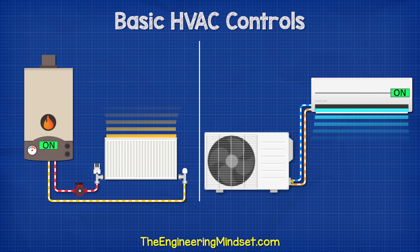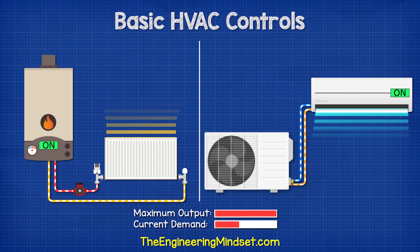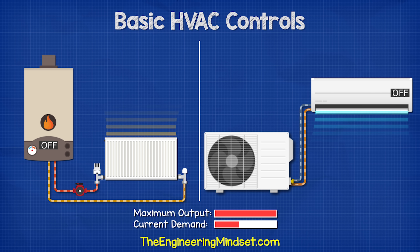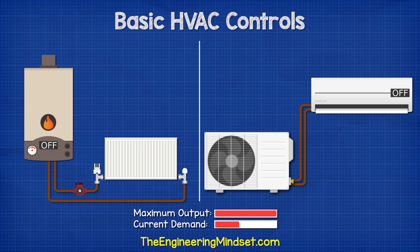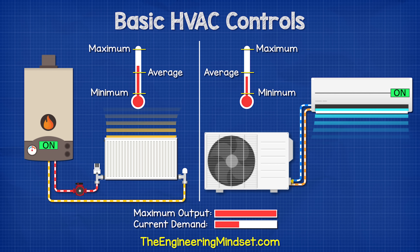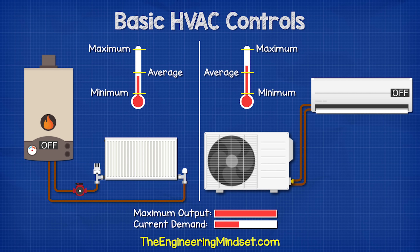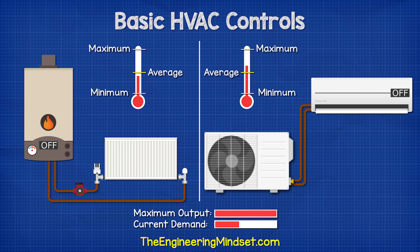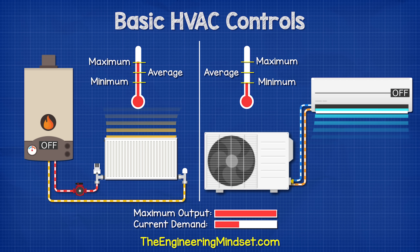We could also control a heating or cooling system with a simple on-off control. For example, if the heating or cooling demand for a room is only half of what the system can provide, then we could just turn the system on for half of the time and off for the other half, perhaps every 30 minutes. This would work, but not very well, because it results in the room being too hot and then too cold, although the average temperature appears normal. To improve this, we could divide this into smaller time intervals, which would achieve a more even temperature.